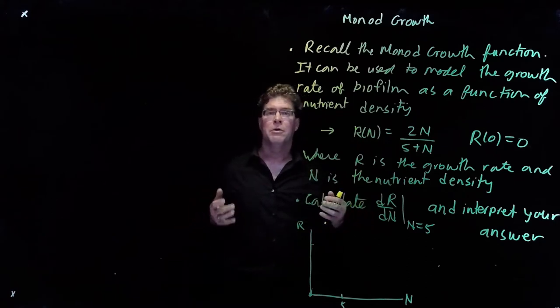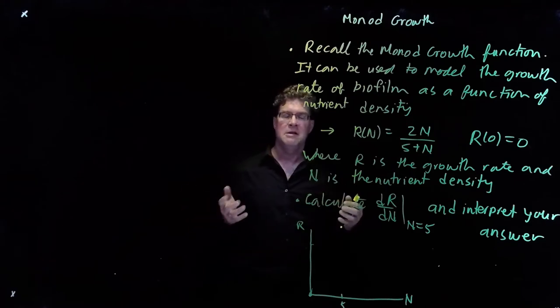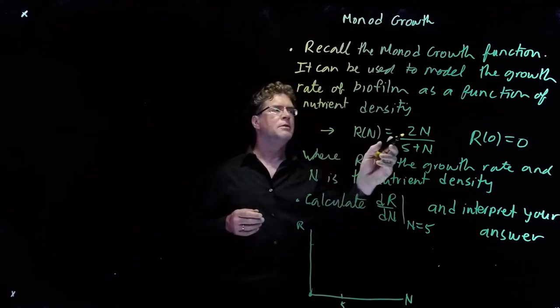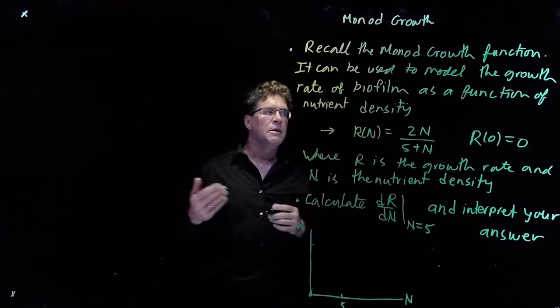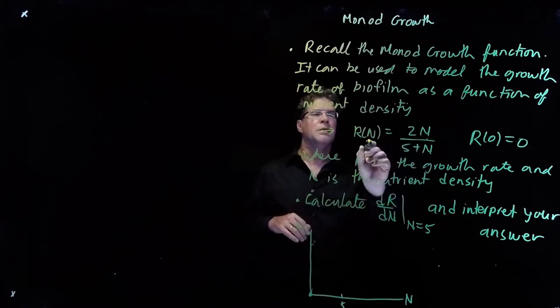And the rate of growth of the biofilm as a function of nutrient density is given by the Monod function. And here it is, r of n, 2 times n over 5 plus n, and we have r at 0 is equal to 0, because if we plug in 0 here, we'll have 0 there.